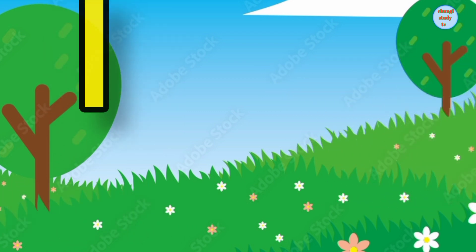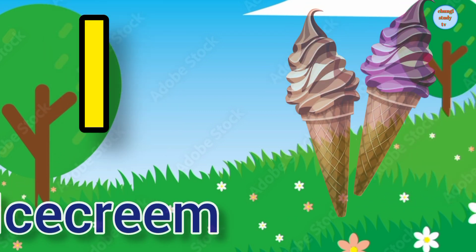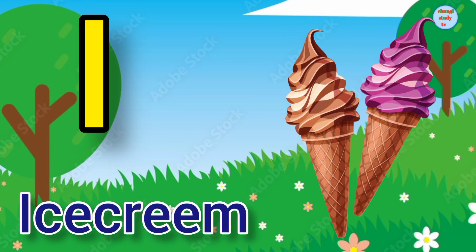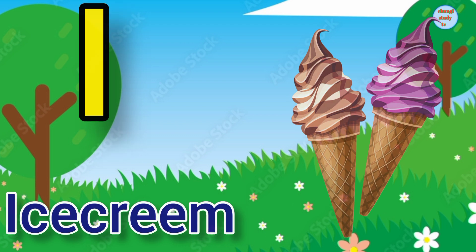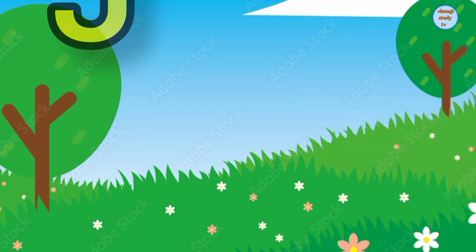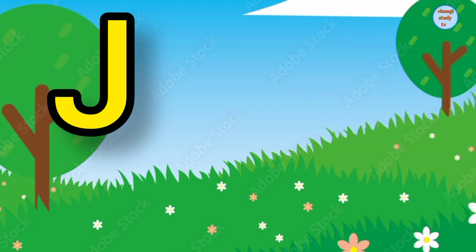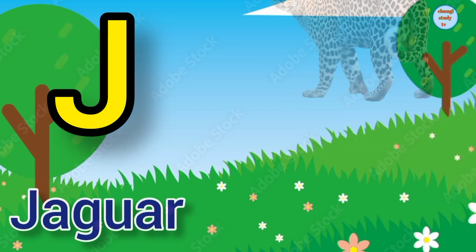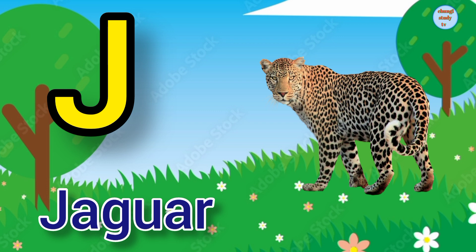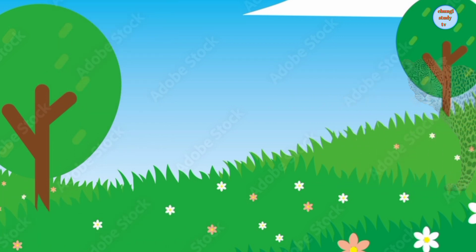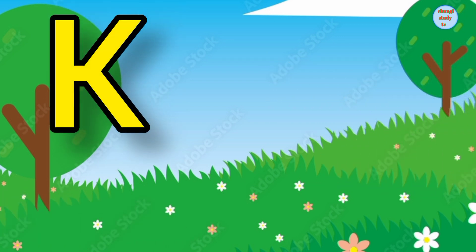I. I for ice cream, ice cream means ice cream. J. J for jaguar, jaguar means tendua.